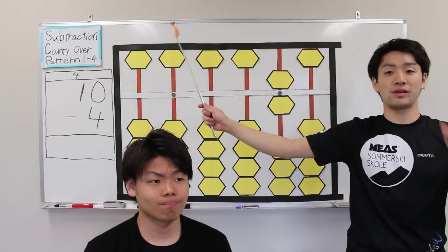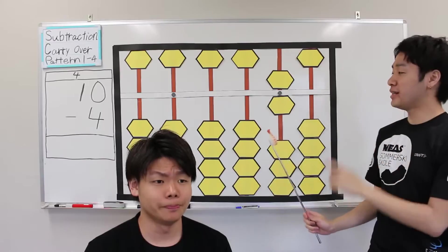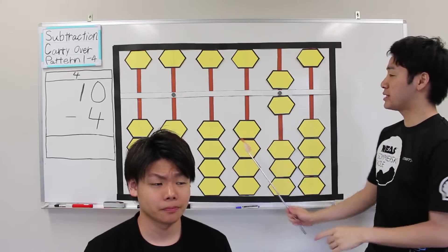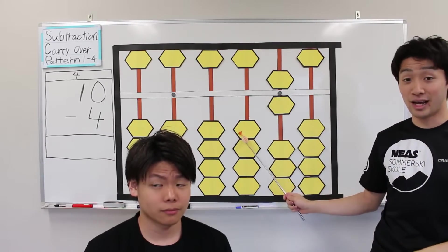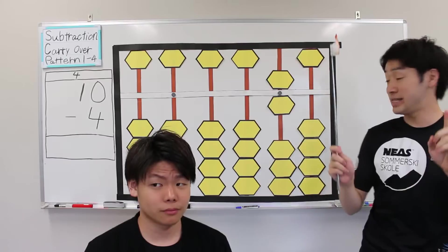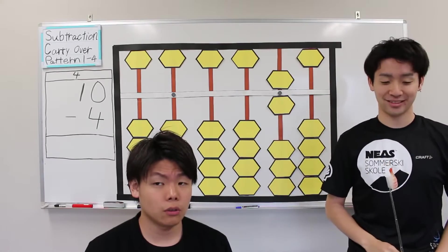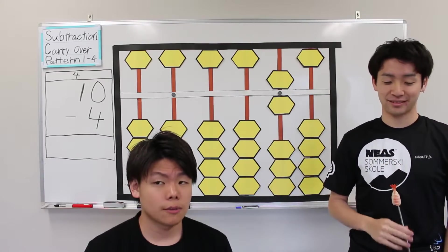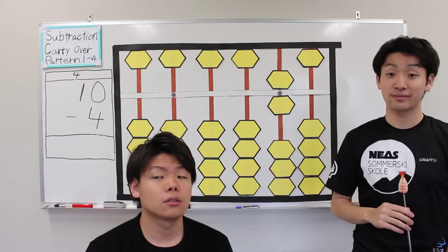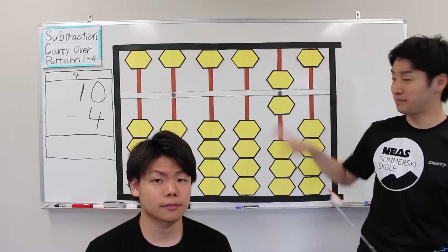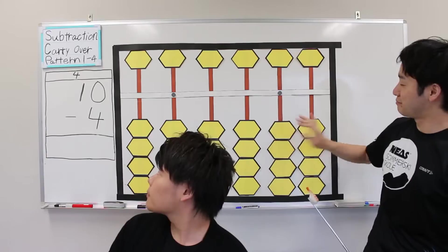This is subtraction carryover pattern 4. 2, subtract 4, subtract 10, and add 6. 2, subtract 4, subtract 10, and add 6. Try again.